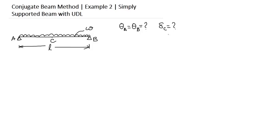Now according to the theory, you first have to draw the conjugate beam of this real beam. As you know, a hinge support of a real beam also remains hinge support in the conjugate beam. So the conjugate beam of a simply supported beam will obviously also be a simply supported beam.